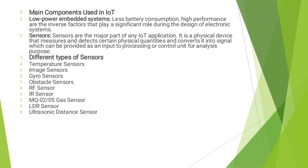The main components used in IoT include Low Power Embedded Systems. Less battery consumption and high performance are inverse factors that play a significant role during the design of electronic systems. Sensors are the major part of an IoT application. A sensor is a physical device that measures and detects certain physical quantities and converts it into a signal which can be provided as an input to a processing or control unit for analysis purposes.